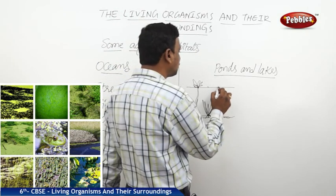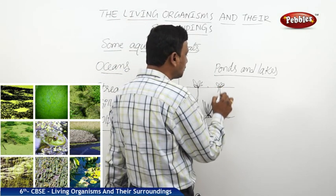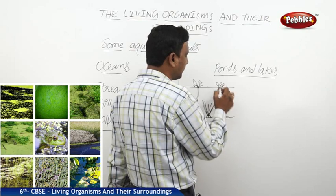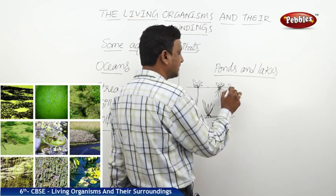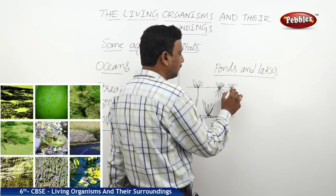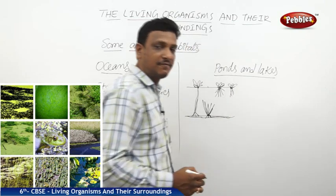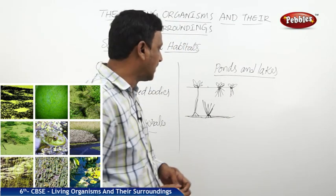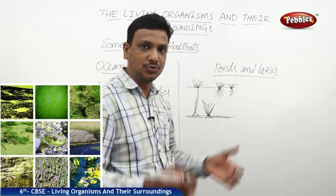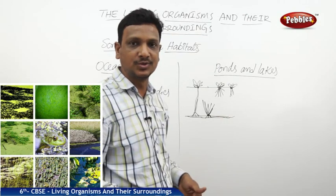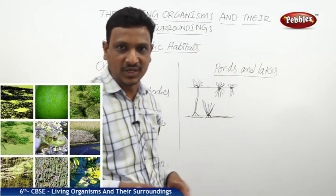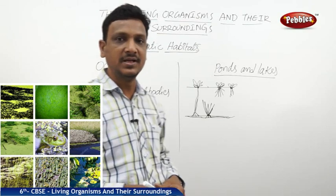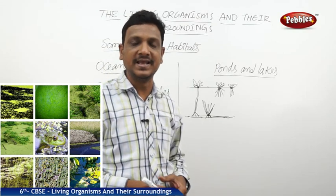Some plants are totally floating, with their roots just in the water and not fixed to the soil — these are floating plants. So we have floating plants, submerged plants, and plants whose roots are fixed in the soil but the plant grows above the surface of the water. These kinds of plants are observed in ponds and lakes.